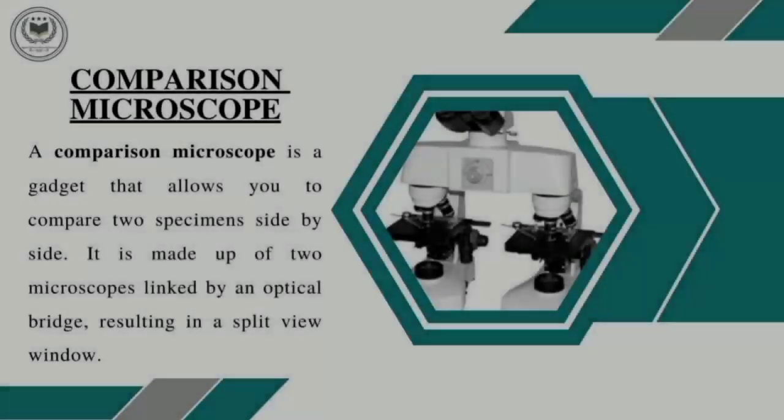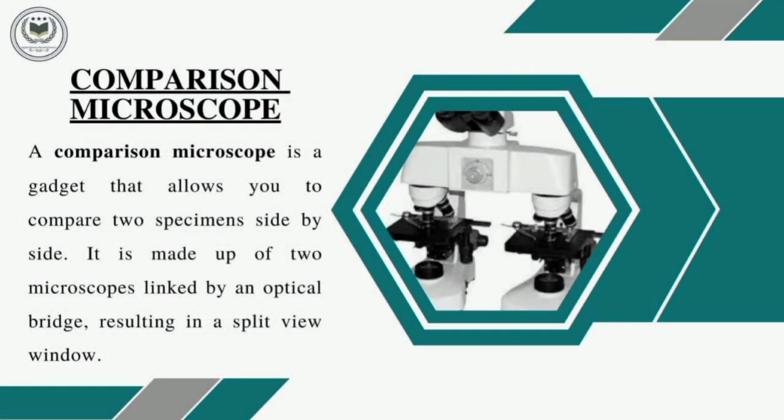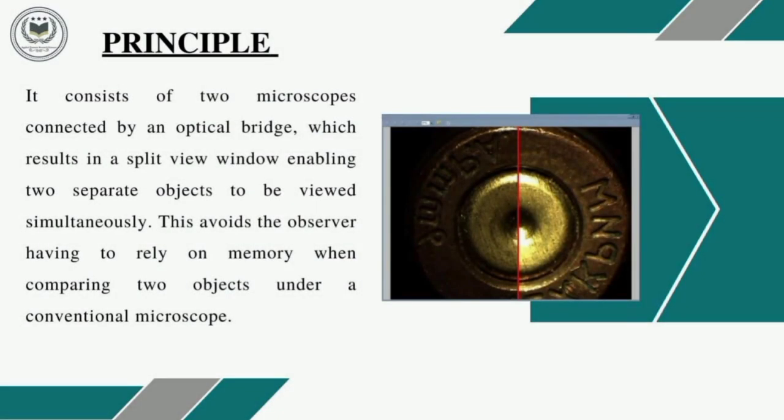So what is actually a comparison microscope? A comparison microscope can be defined as a magnifying instrument used to compare two specimens simultaneously, side by side. The two individual microscopes are connected by an optical bridge, which gives a split-view window.